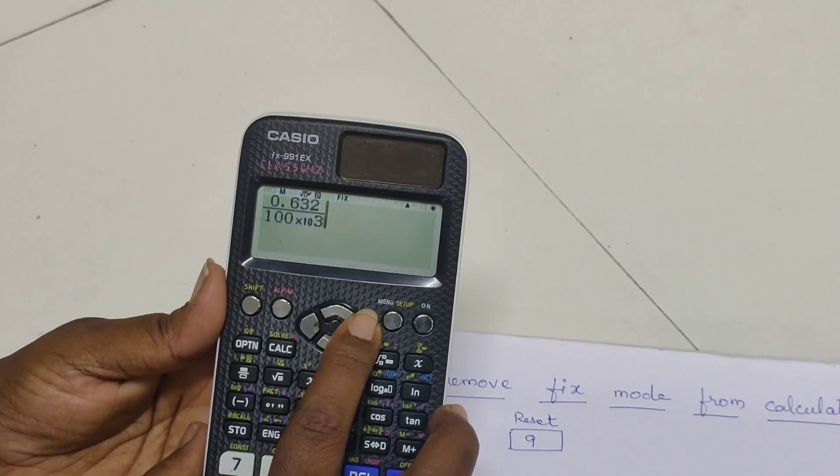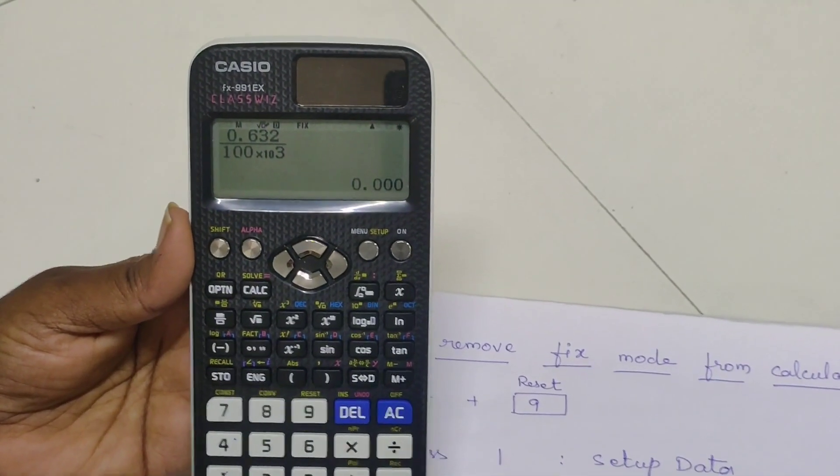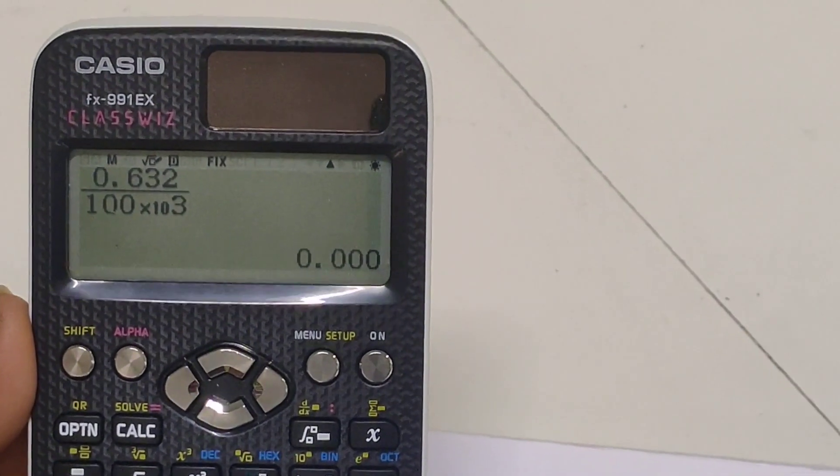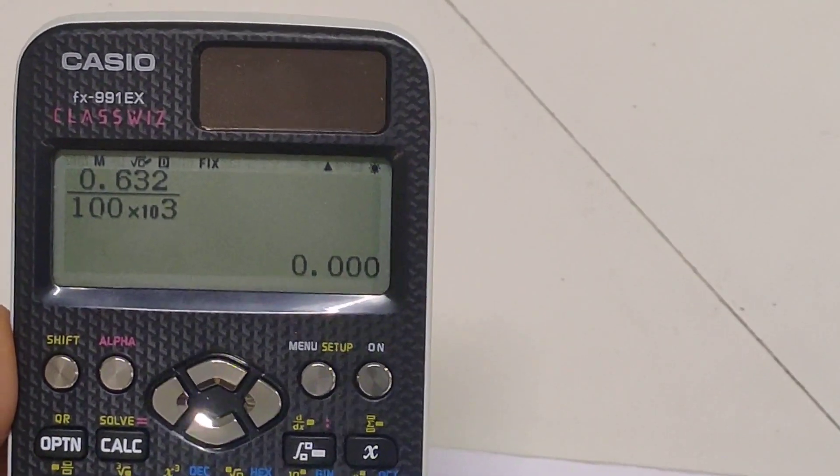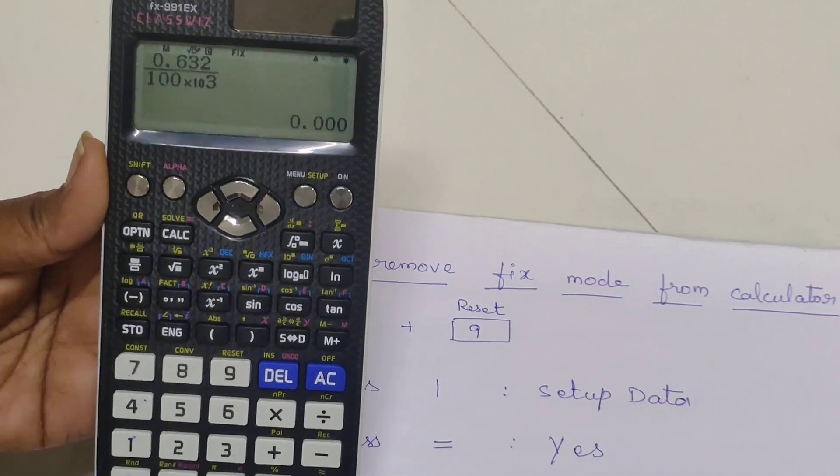Now come to the right side press equal to can you observe this the answer is showing 0.000 actually this is not the exact answer for this problem but it is showing like that.